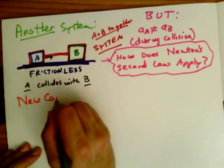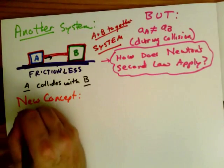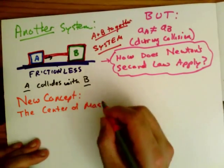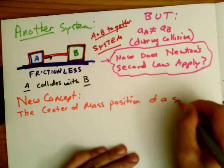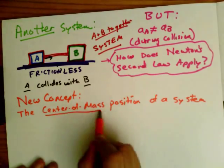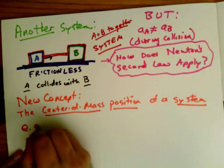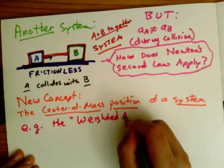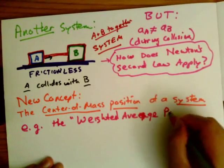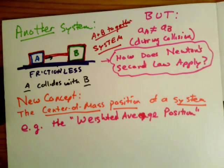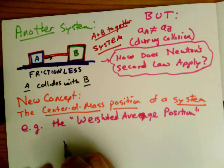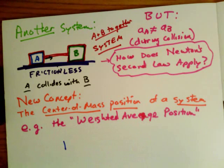So how do we apply Newton's second law to this problem? Well we need a new concept and that new concept is the center of mass of the position of the system, the center of mass position for the whole system. So this is just the weighted average position. What do we mean by the weighted average?